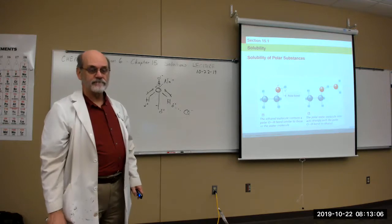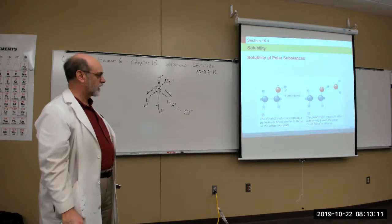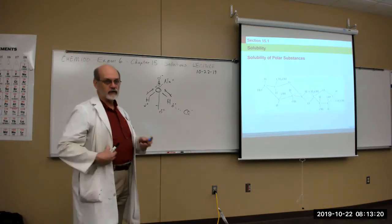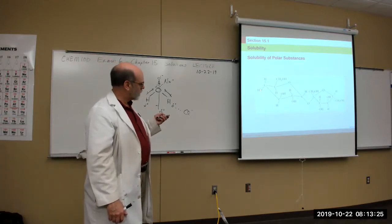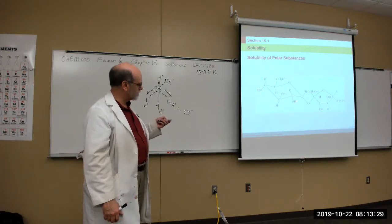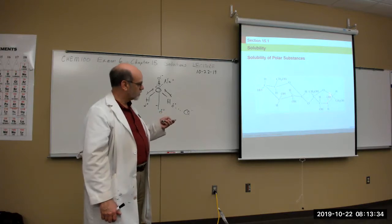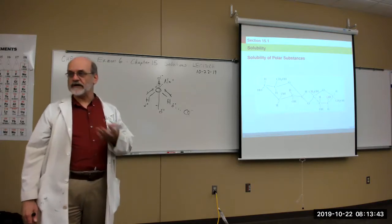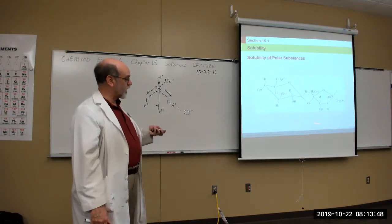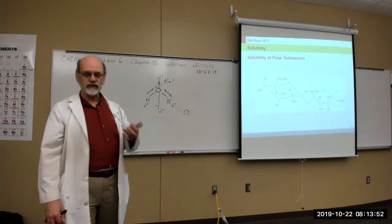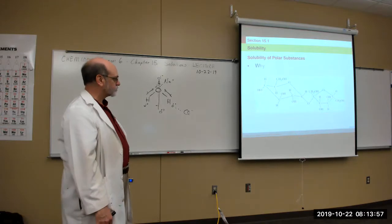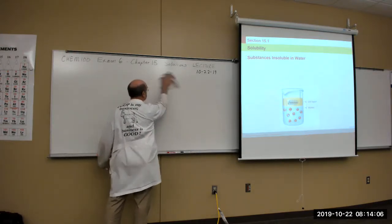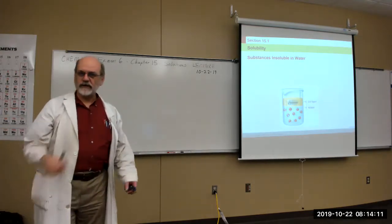You can have more than one polar bond. For instance, sucrose has all these hydroxyl (alcohol) groups attached, giving plenty of places for water to attack the molecule. That's why table sugar is so soluble — it has so many sites where water can attach and attract it. This is one example where you can get more solute in the solution than solvent.